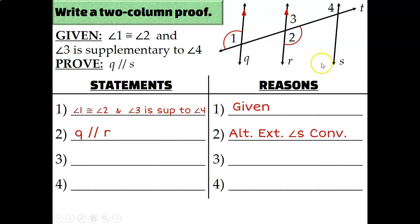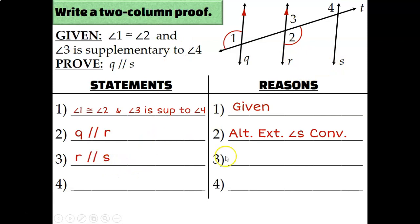Now let's look at line R and line S. We were told in the given that angle three and four were supplementary, and I see on the diagram that angle three and angle four are consecutive interior angles. They're both above transversal T and they're in between lines R and S — that makes them consecutive interior. So since I have consecutive interior angles that are supplementary, I can conclude that line R and line S are parallel by the consecutive interior angles converse.